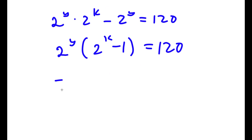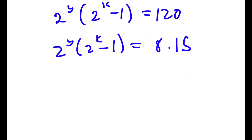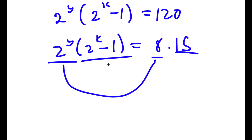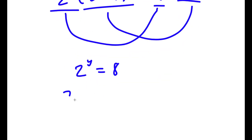Now 120 is the same thing as 8 times 15. Notice how we have an even number — 2 to the power of any number is even — times an odd number, because an even number minus 1 is going to be odd, equal to an even number times an odd number. Meaning these two even numbers are equal to each other and these two odd numbers are equal to each other. So we have 2 to the power of y equals 8, and 2 to the power of k minus 1 equals 15.